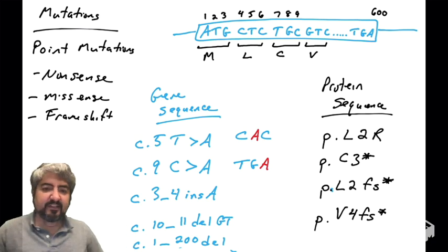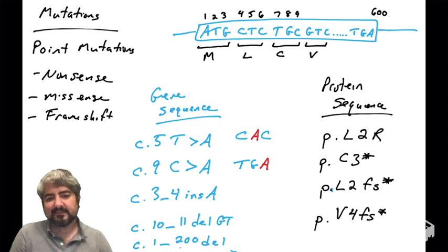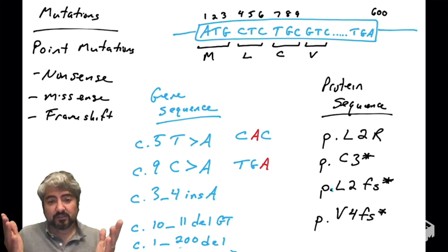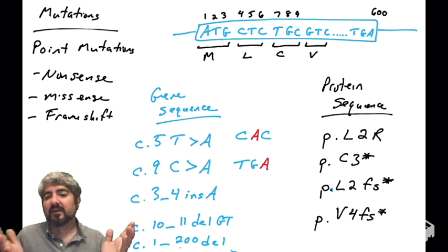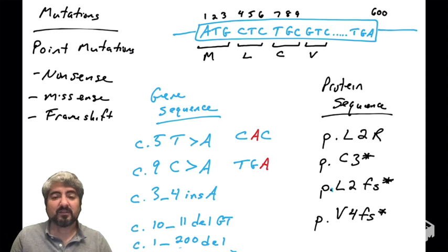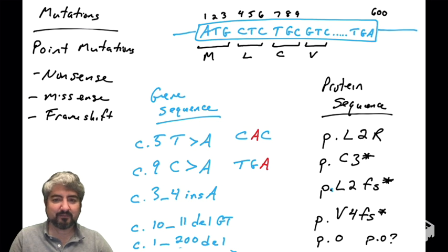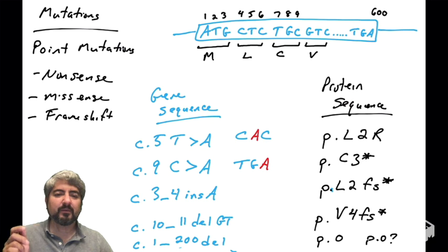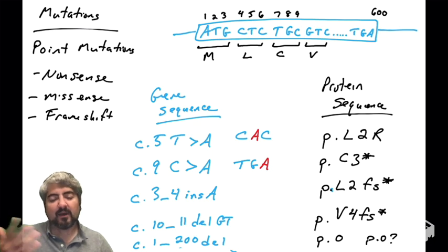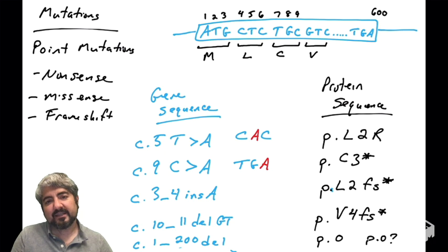Lastly, what if you see c.1_200del? That is a very large deletion — deleting all nucleotides from one to 200. You've deleted a third of the protein-coding nucleotide sequence, so you're probably not going to make any protein. This would be indicated by p.0 or p.0? — no protein being made. These are theoretical examples of how one would read nucleotide changes in a gene.